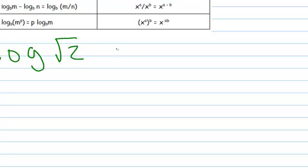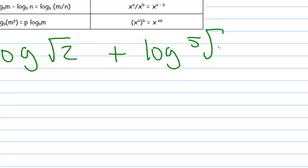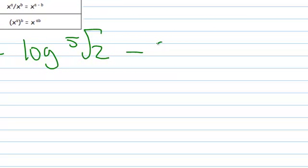So I've got something expanded, so let me take some more room to write this up. So the log of the square root of 2 plus the log of the 5th root of 2 minus 2 times the log of x. So the first thing I'm going to want to do is get some powers going on here. So let's just rewrite this with some powers.